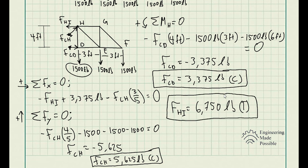One important detail: since we found that member CJ is in compression rather than tension, its x-component direction reverses, making that term a positive sign in the x-direction equation. Be careful with these sign details, as they can lead to incorrect answers. Accounting for this correctly gives FHI equal to 6,750 pounds in tension.